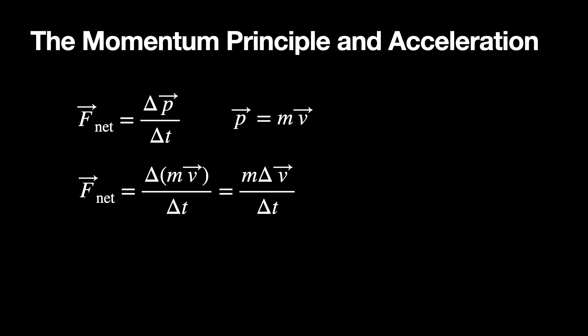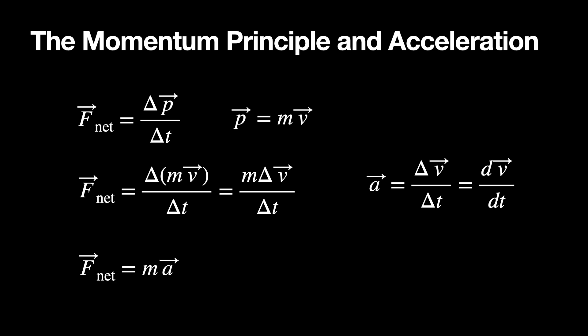If I put in mass times velocity for the momentum, I can factor out the mass — assuming the mass doesn't change, which normally it doesn't — and I get the net force equal to M times delta V over delta T. I can define the acceleration vector as the change in velocity with respect to time, giving me F net equals MA.